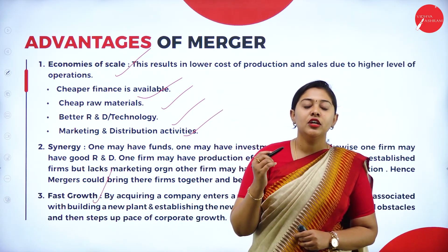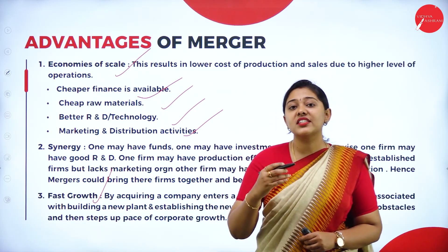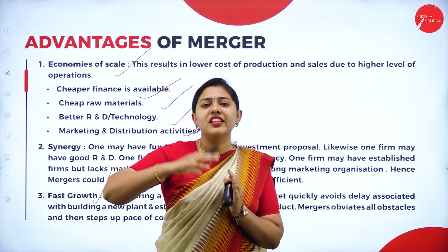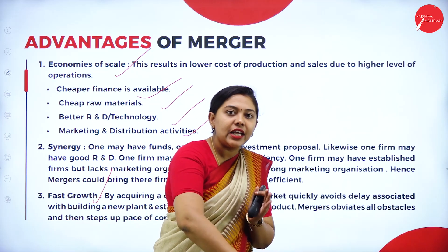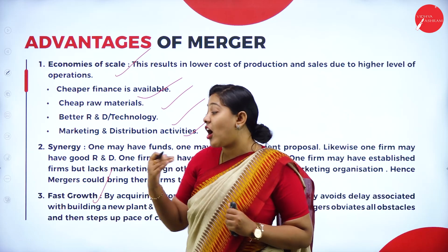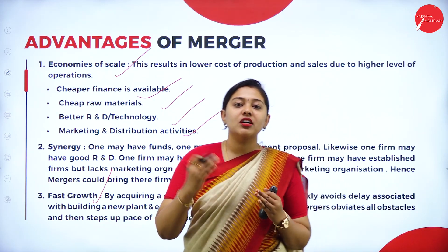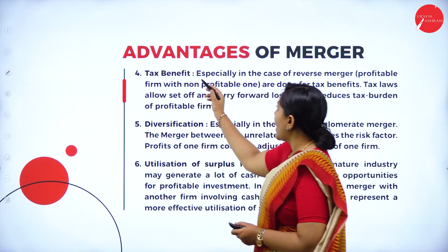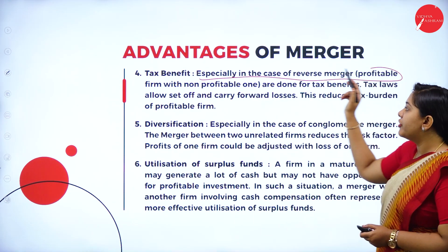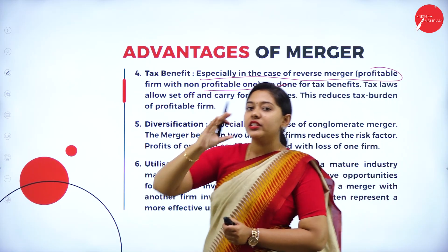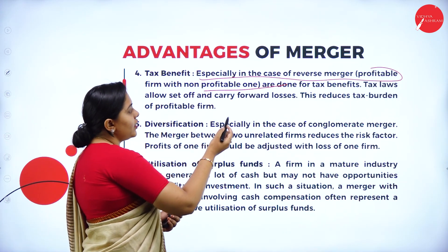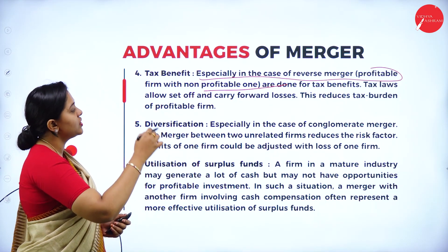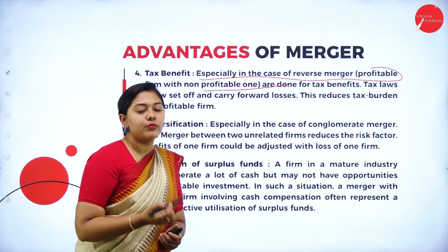Fast growth is another advantage — the company can grow at a fast rate because it can access available resources. If Company A has raw materials that Company B needs, Company B need not import them; it can take them from Company A directly. This leads to faster growth and optimum utilization of resources. Tax benefit is another advantage — especially in reverse merger, a profitable firm taking over a non-profitable firm can avail tax benefits, as tax laws allow set off and carry forward of losses, reducing the tax burden.